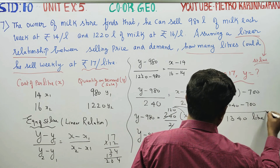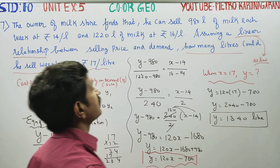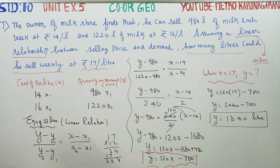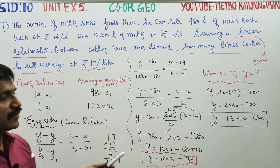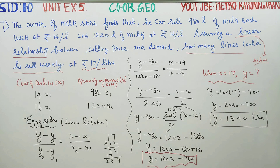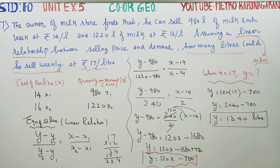If the price is 17 rupees per litre, then the demand y = 120(17) - 700 = 2040 - 700 = 1340 litres. So he will sell 1340 litres at 17 rupees per litre. Thank you.